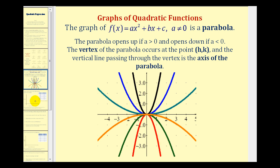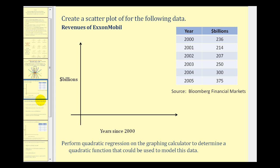Let's take a look at our example. Here we have some data about the revenues of ExxonMobil from the years 2000 through 2005. So what we'll do is plot the paired data as ordered pairs on the coordinate plane and see if the data could be modeled by a quadratic equation.